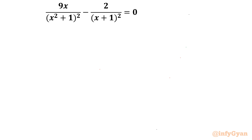Welcome to InfiGarn friends. In this very exciting video of Rational Equation Challenges, we are going to solve one very interesting problem: 9x over (x² + 1)² minus 2 over (x + 1)² equal to 0.